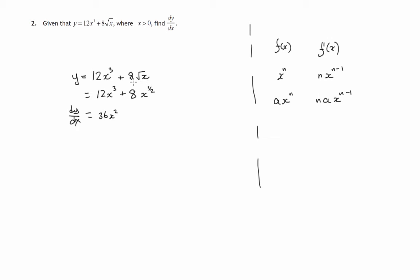Bring the power down, 1/2 times 8 would be 4x, take 1 away from the power. 1/2 minus 2/2 is -1/2.